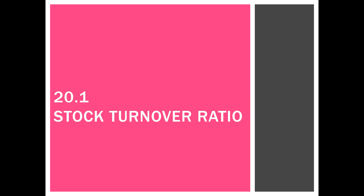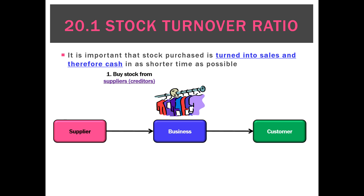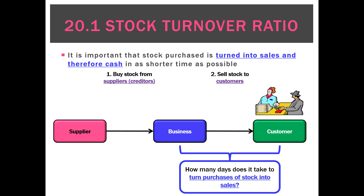The whole point of a business is that it buys stock and turns it into sales, so it's very important that we turn stock into sales and therefore cash in as short a time as possible. The basic way a business works is it buys stock from a supplier or creditor, puts it on the shelf, then sells it to the customer. What we'd like to know is, on average, how many days does it take to turn these purchases of stock into sales.